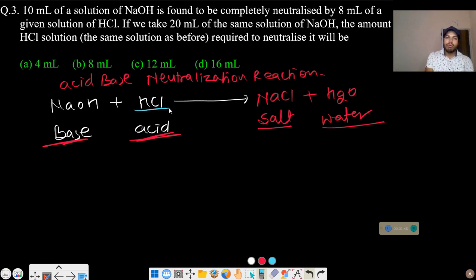Now if you look at this reaction, 1 molecule of HCl requires 1 molecule of NaOH. This means if I have X molecules of HCl, then I need X molecules of NaOH.